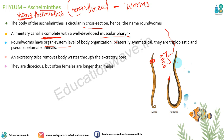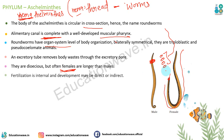Ye dioecious hote hain - matlab male alag aur female alag hote hain. Jaise Platyhelminthes monoecious (hermaphrodite) the - ek organism mein male female dono. Dioecious mein male alag female alag hote hain. Females males se much larger hoti hain.